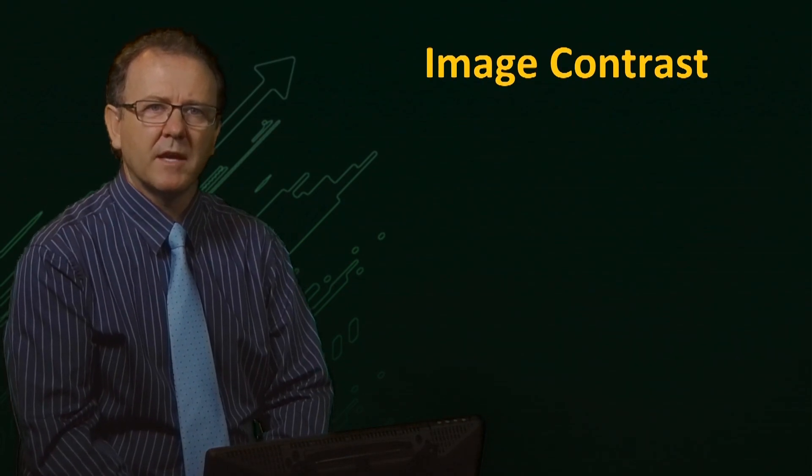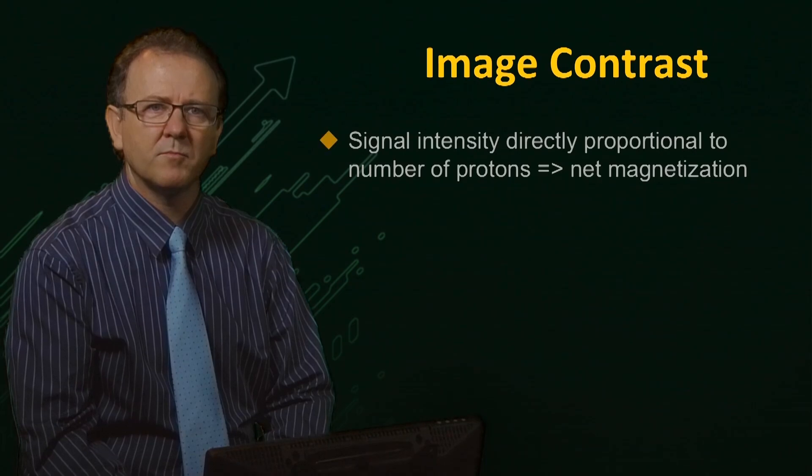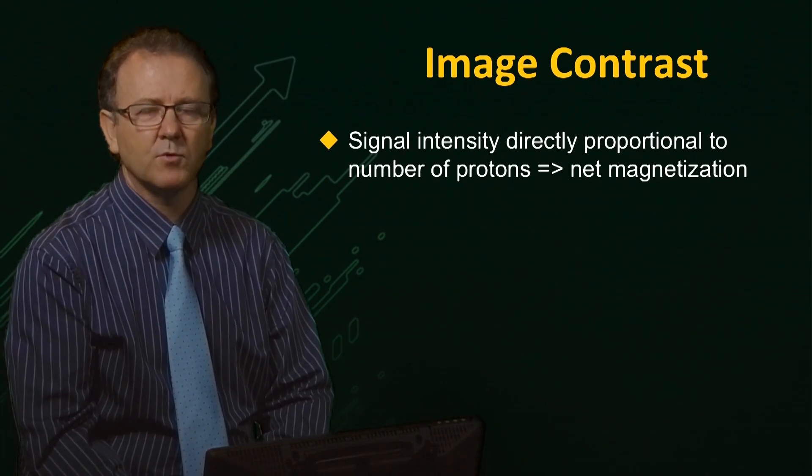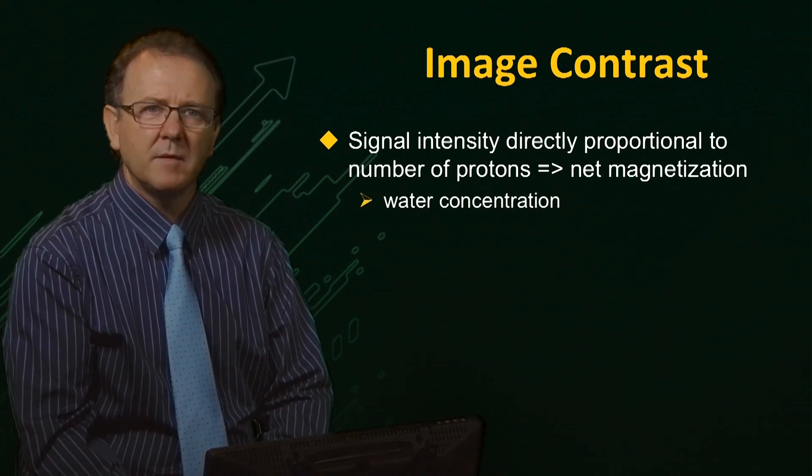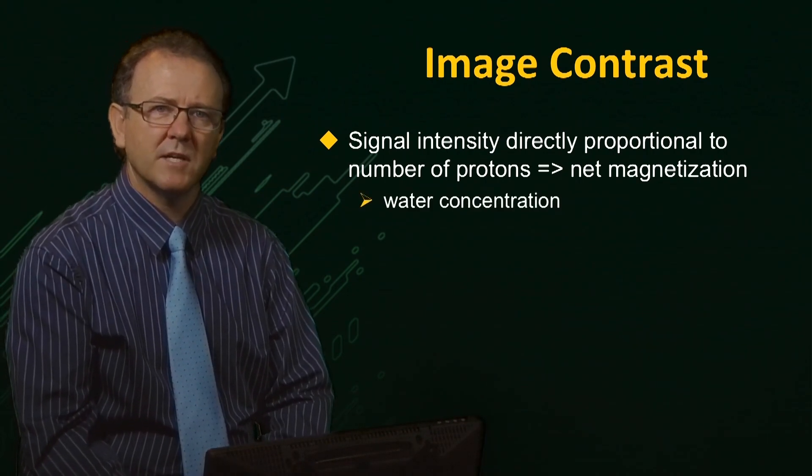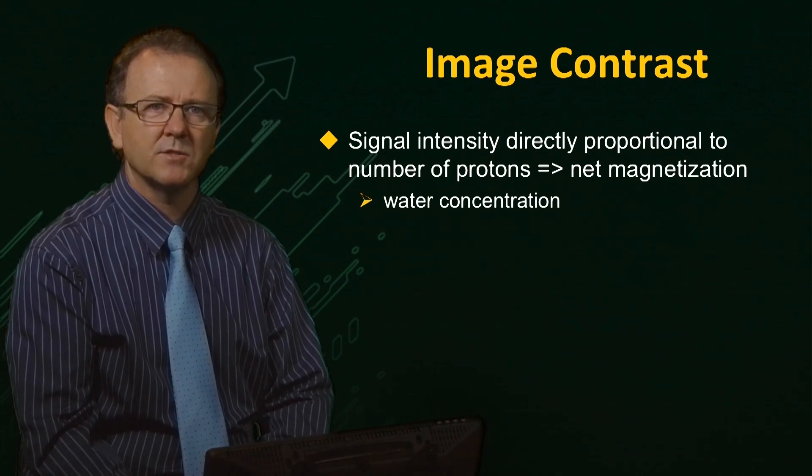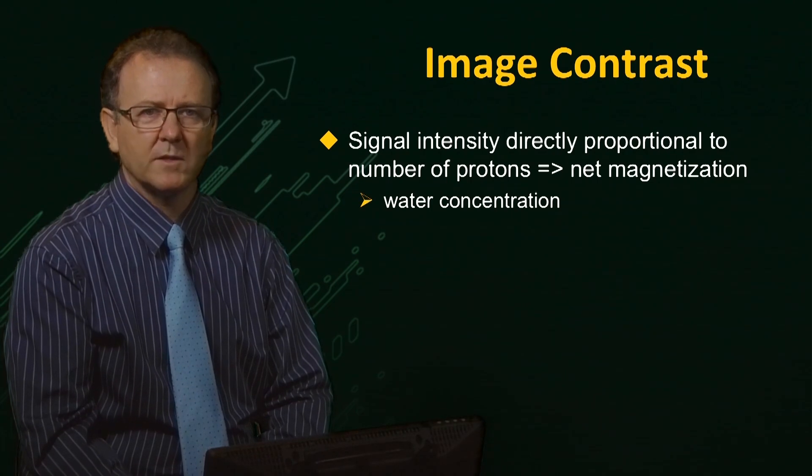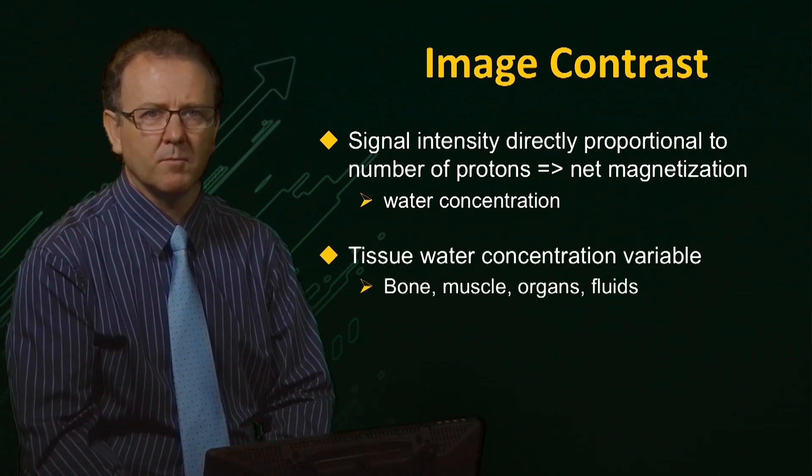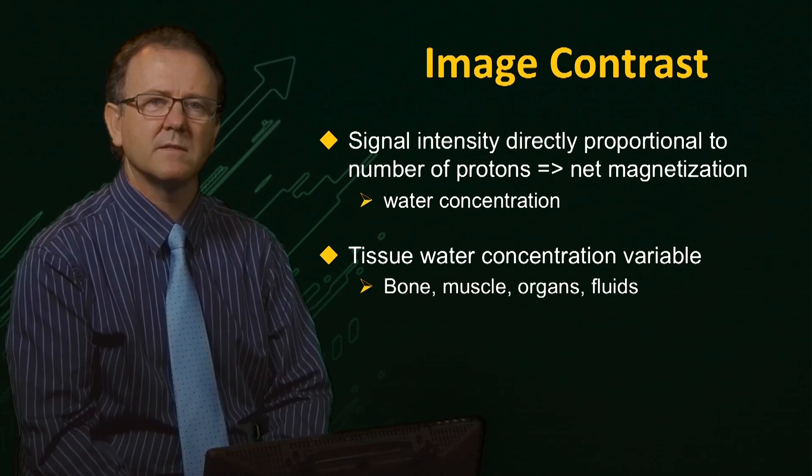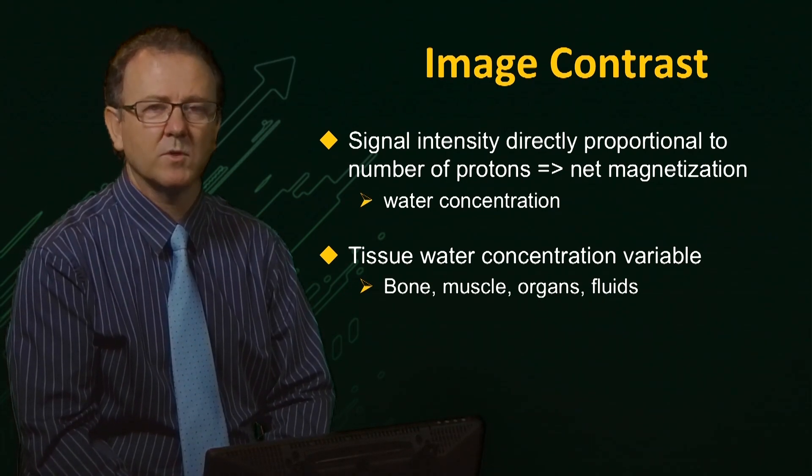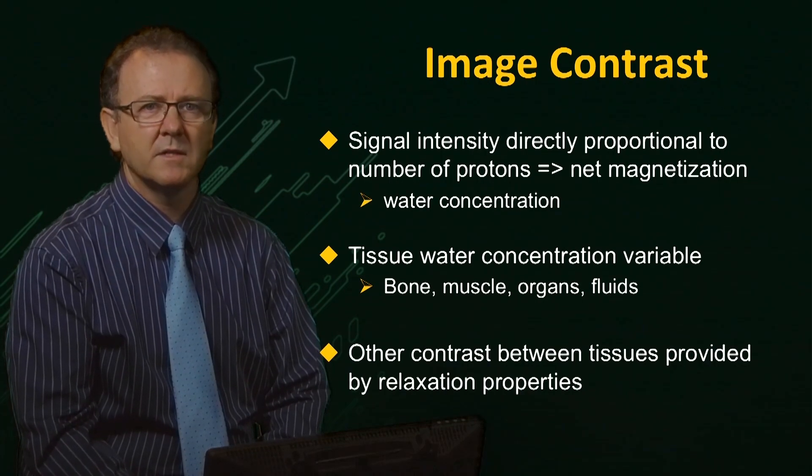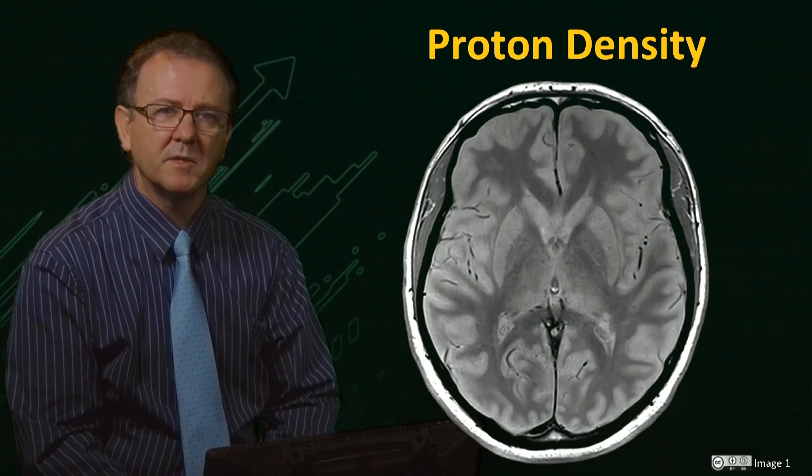We know that the intensity of the MR signal is directly proportional to the number of protons in the sample, and in particular, the net magnetization formed by these spins. And so the image signal that we produce is essentially a map of the water density at each location. Since the water concentration varies from one type of tissue to another, for example from bone, which has low water content, to the brain, which is high in water content, we expect that we should be able to distinguish these different tissues from one another simply due to their water content. And this proves to be true.